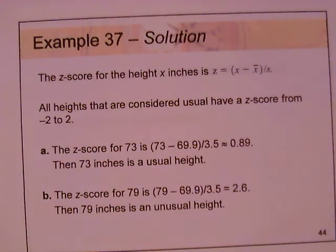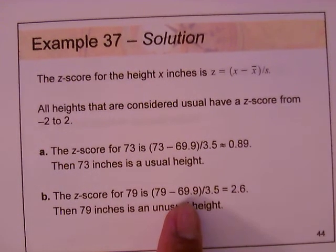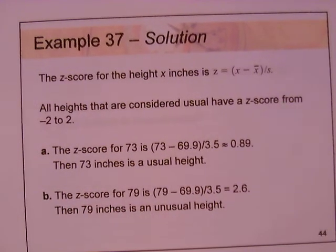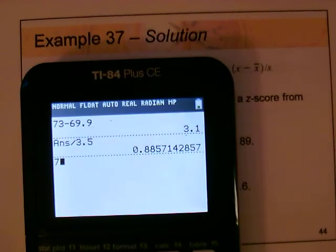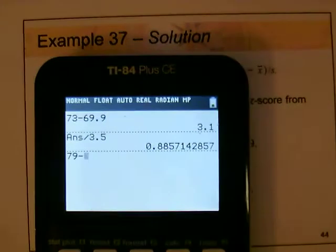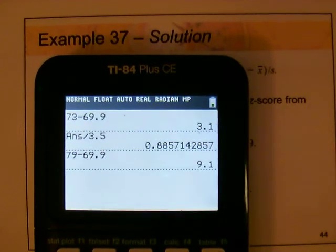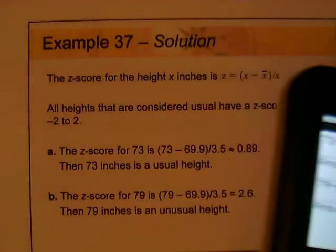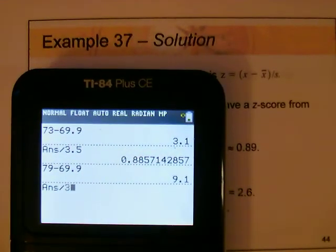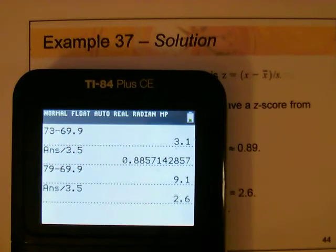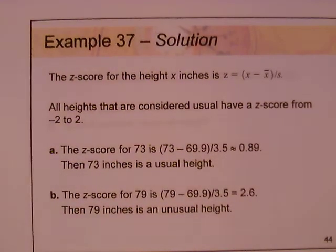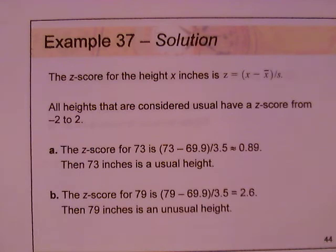For part B, the Z-score for 79 inches: 79 minus 69.9 equals 9.1, divided by 3.5, giving 2.6. Since 2.6 is bigger than 2 and not within the range of negative 2 to 2, 79 inches is considered an unusual height.